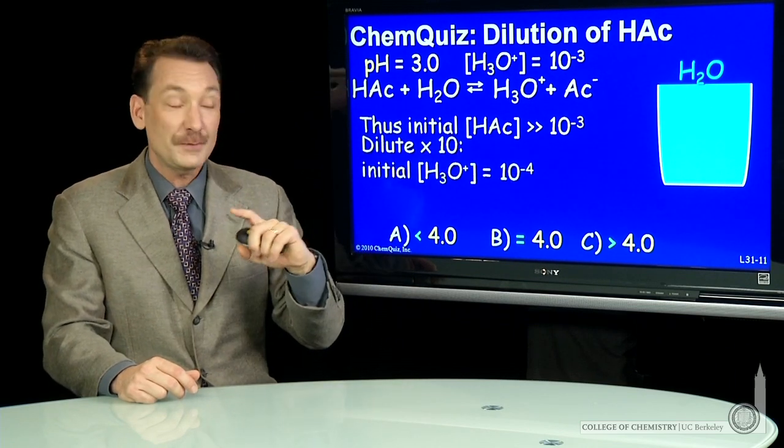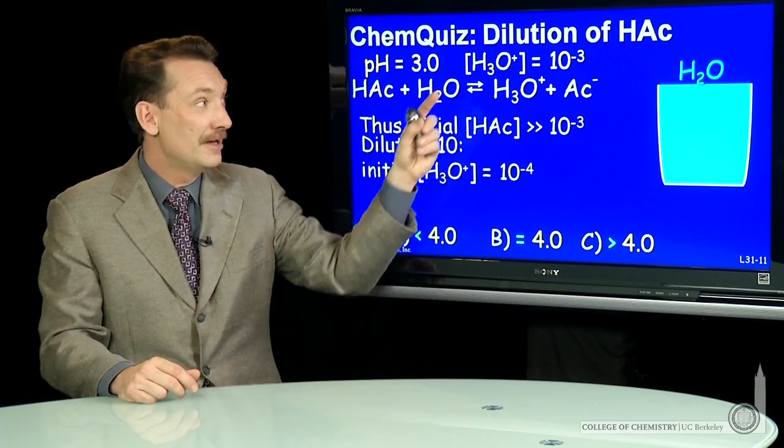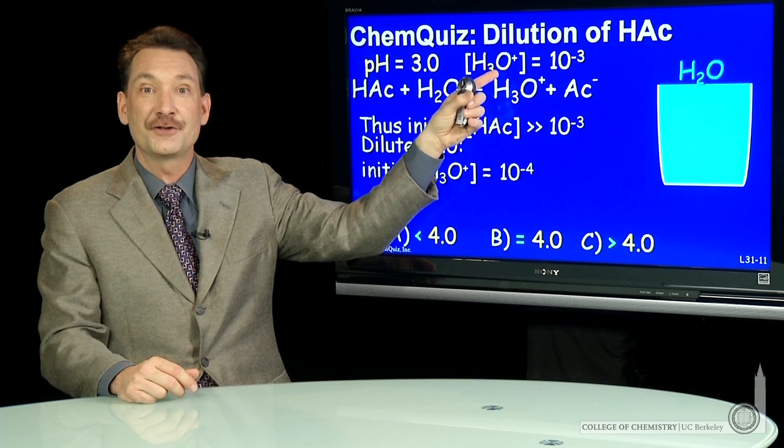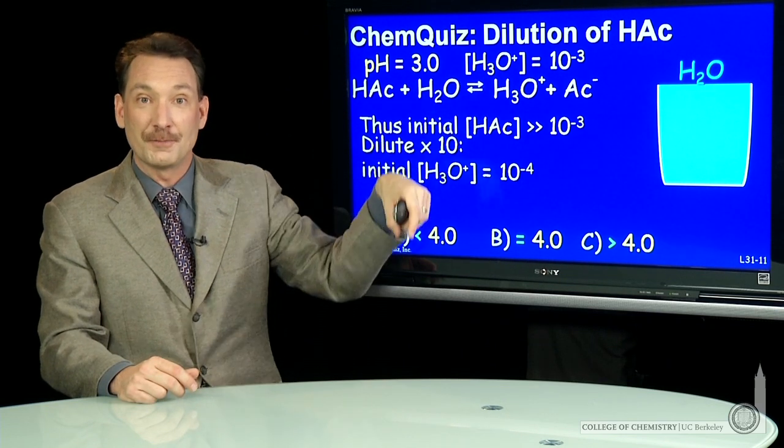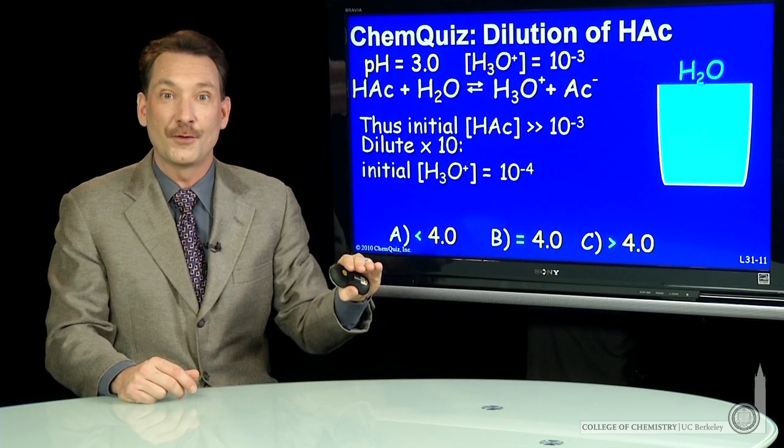Now we dilute it. When you dilute by a factor of 10, initially this H3O+ concentration drops from 10^-3 to 10^-4.